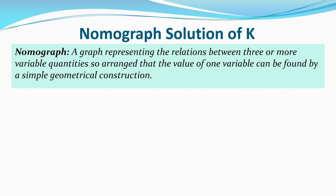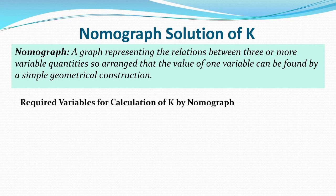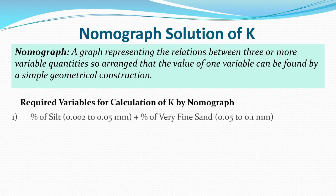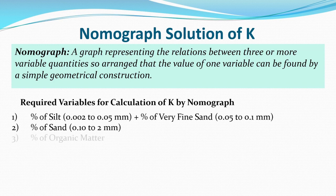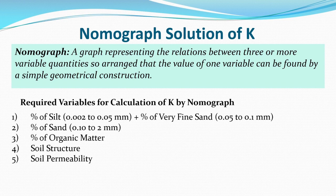To calculate K using a nomograph, five variables are needed: percentage of silt plus percentage of very fine sand, percentage of sand, percentage of organic matter, soil structure class, and soil permeability class. These are provided in the graph; we just need to connect them to get the final approximation of the Soil Erodibility Index K.